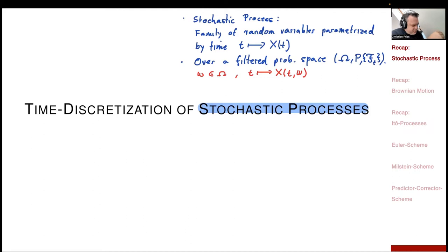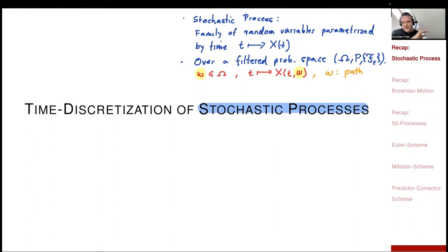For that reason, we often call omega here the path. So that omega is sometimes called the path, or sometimes you call the function t maps to x(t, omega) the path.